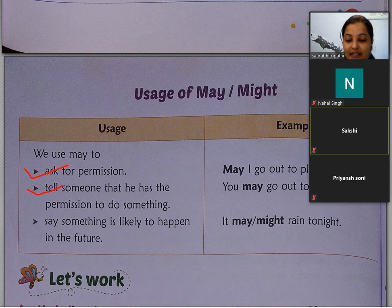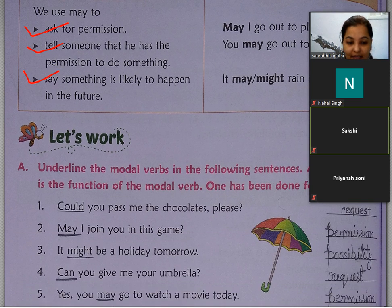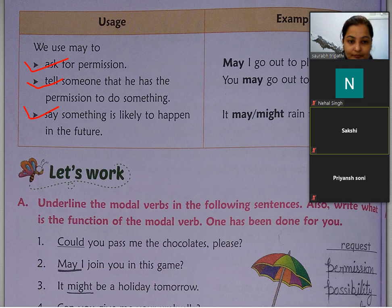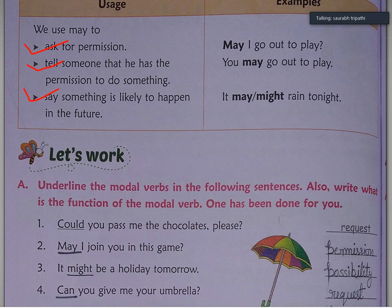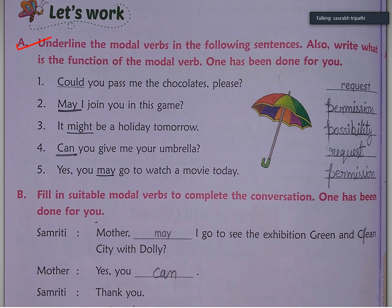आपने देखा कि कुछ sentences ऐसे होते हैं where we use may instead of can। Next exercises हैं आपकी। Exercise A में आपको modal verbs को underline करके यह show करना है कि उस sentence में क्या show हो रहा है — permission है, possibility है, request है। यह आपको book में करना है, copy में नहीं।